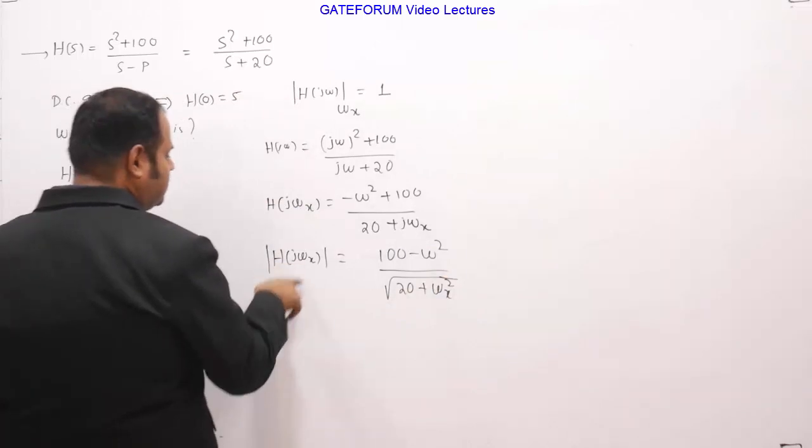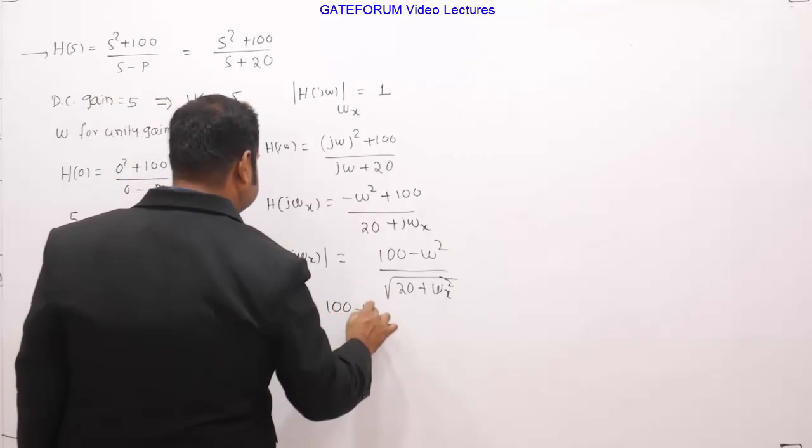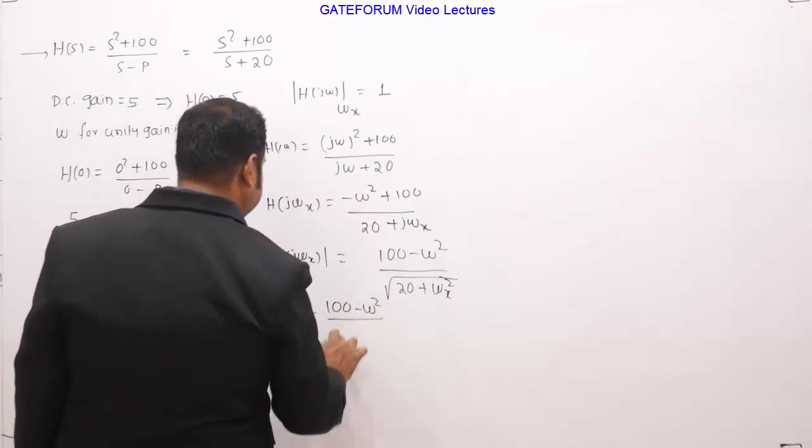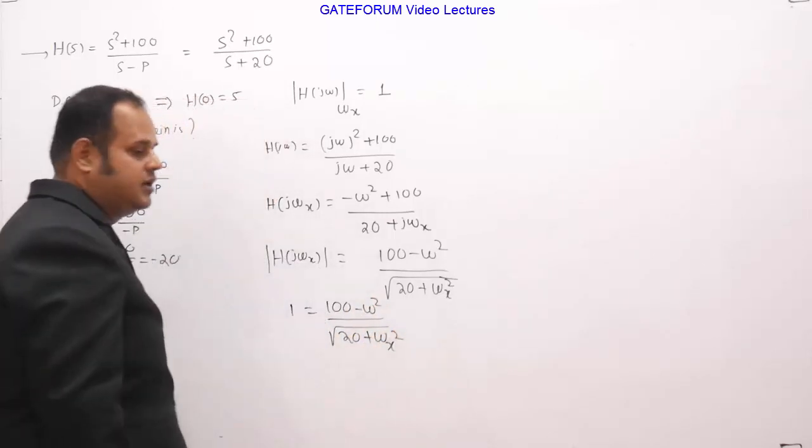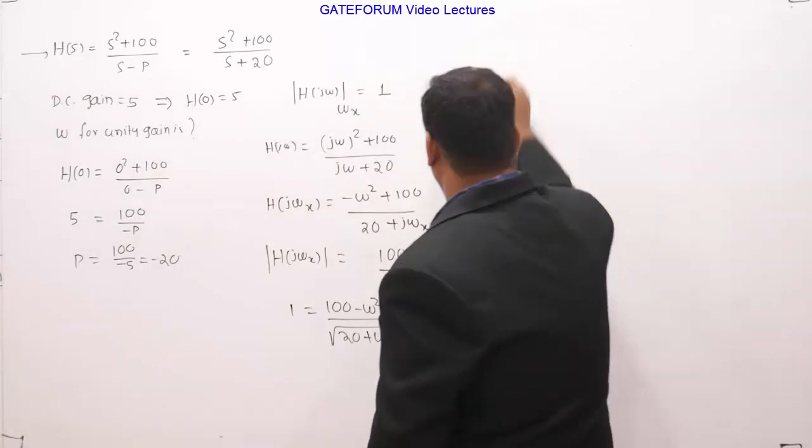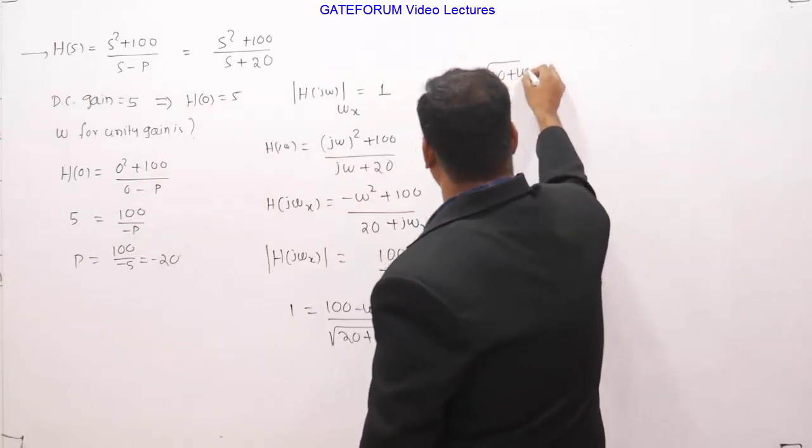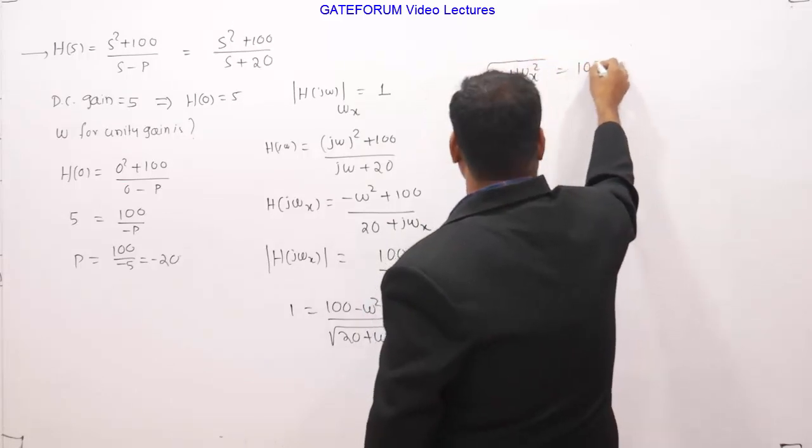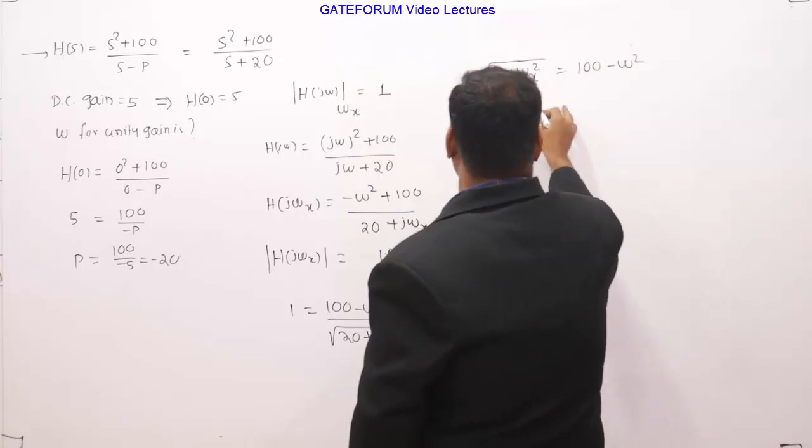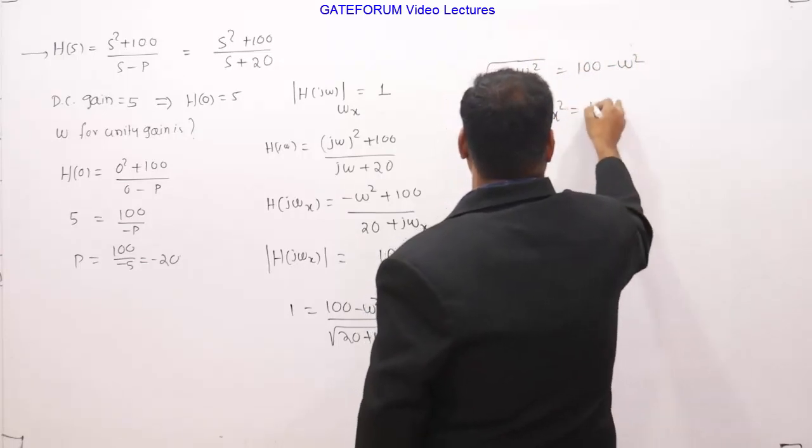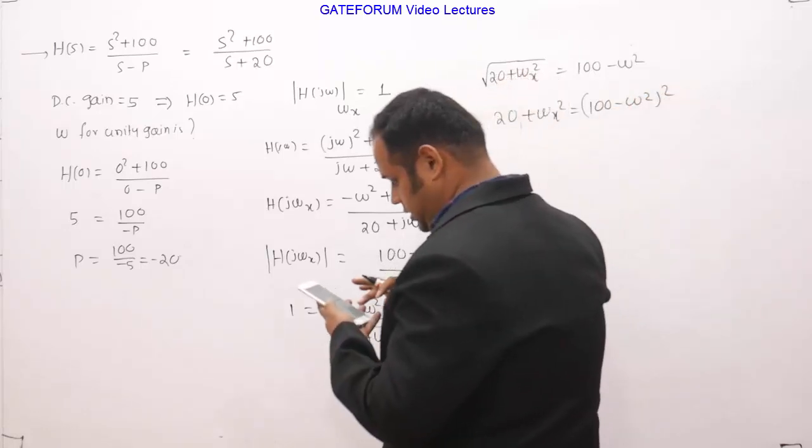But we know that this quantity should be 1, so that is 1 equals 100 minus omega x square divided by square root of 20 square plus omega x square. Now if I simplify this equation, so square root of 20 square plus omega x square is equals to 100 minus omega x square.